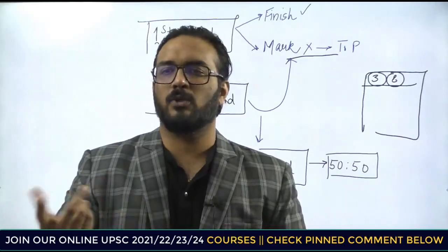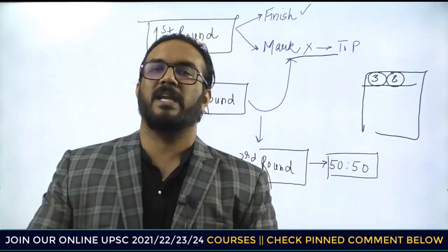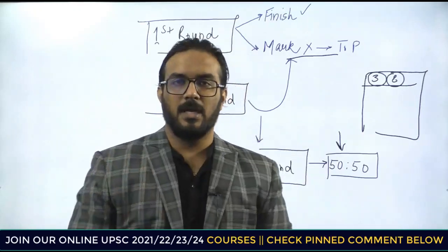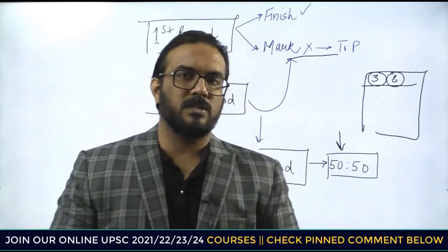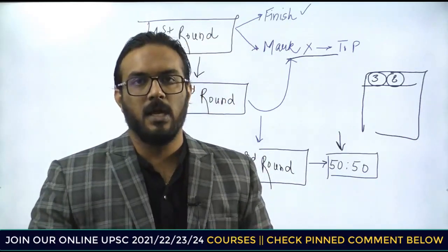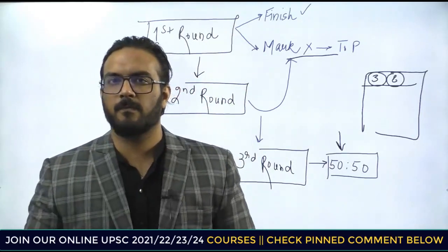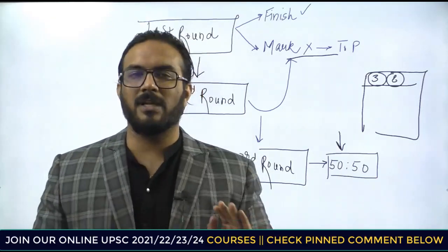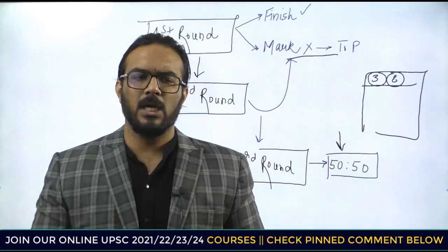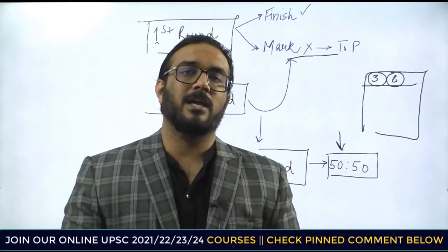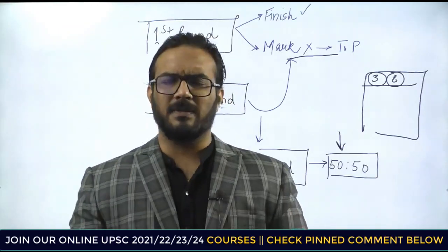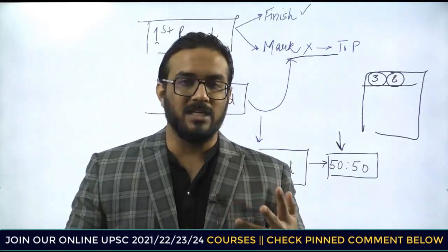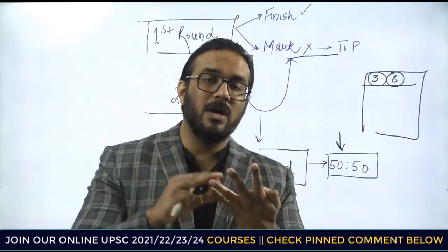50-50 confusion والے questions میں — اگر آپ نے تیاری کی ہے تو ایک statement سمجھتے ہی ہوگے اور ایک نہیں سمجھتے ہوگے۔ 3rd round میں وہ questions آتے ہیں جن میں confusion ہے کہ کروں یا نہیں۔ اس particular stage پر آپ کو count کرنا ہے کہ کتنے questions attempt کر لیے ہیں۔ اگر آپ نے 70-75 questions attempt کر لیے ہیں تو پھر آپ ان confused questions کو چھوڑ سکتے ہو — risk سے پیچھے ہٹ سکتے ہو۔